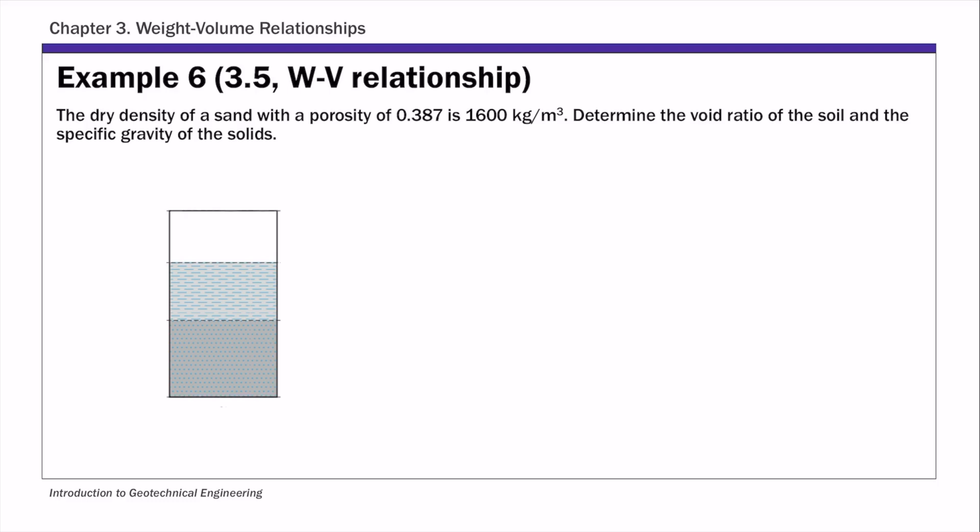Hello everyone, this is example 6 of chapter 3. For this example, you know the dry density of sand is 1600 kg per meter cube, you know its porosity, and you are asked to find the void ratio e and the specific gravity gs.